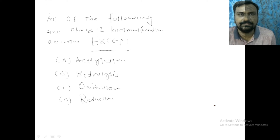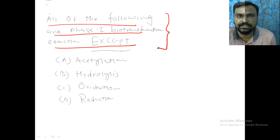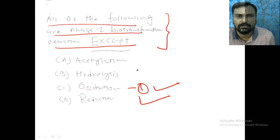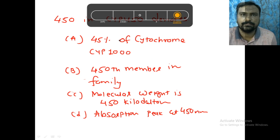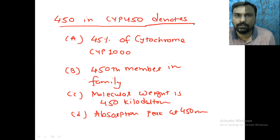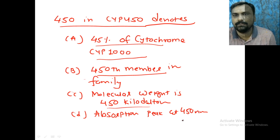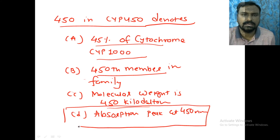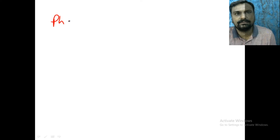Now for the MCQ portion. Question: All of the following are phase 1 biotransformation reactions except — acetylation, hydrolysis, oxidation, or reduction? The correct answer is acetylation, because oxidation, reduction, and hydrolysis are phase 1 reactions, while acetylation is a phase 2 reaction. Second question: What does '450' in cytochrome P450 denote? Options: 45% of cytochrome, 450 members in the family, molecular weight of 450 kilodaltons, or absorption peak at 450 nm? The correct answer is absorption peak at 450 nanometers — cytochrome P450 is a heme-containing enzyme.